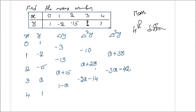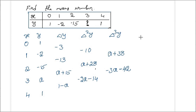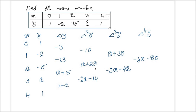Now next, delta to the power 4, Δ⁴y. Computing from the third differences: the value comes out to -4a, and -80. So Δ⁴y gives us the two entries: -4a and -80. Now here is the key — if we assume it is a fourth degree polynomial, this 4th difference must be constant.